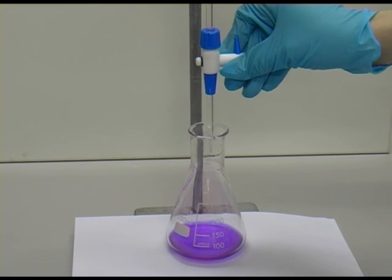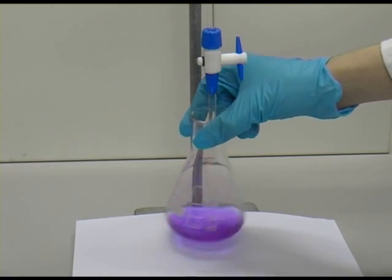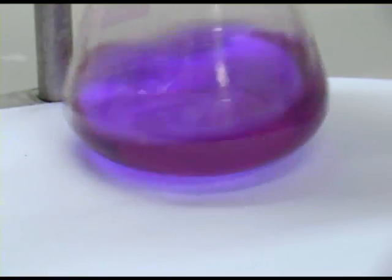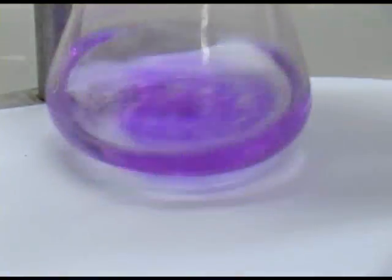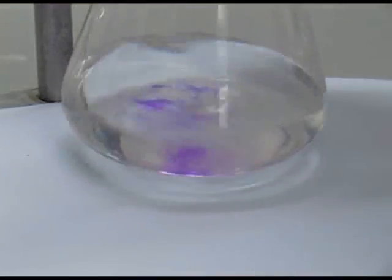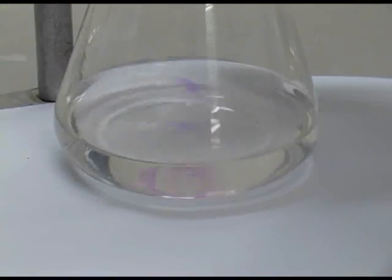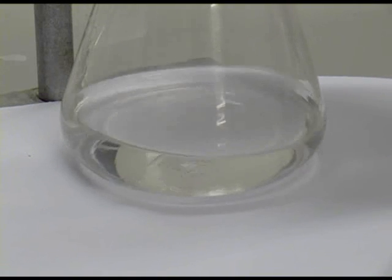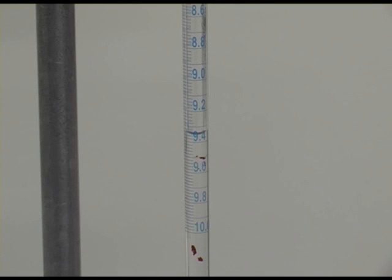The scientist opens the tap and begins to swirl the flask gently. Once the indicator has changed from coloured to clear, we know that all the alkali has been neutralised by the acid. The scientist quickly closes the tap on the burette and measures how much acid was added to the alkali.